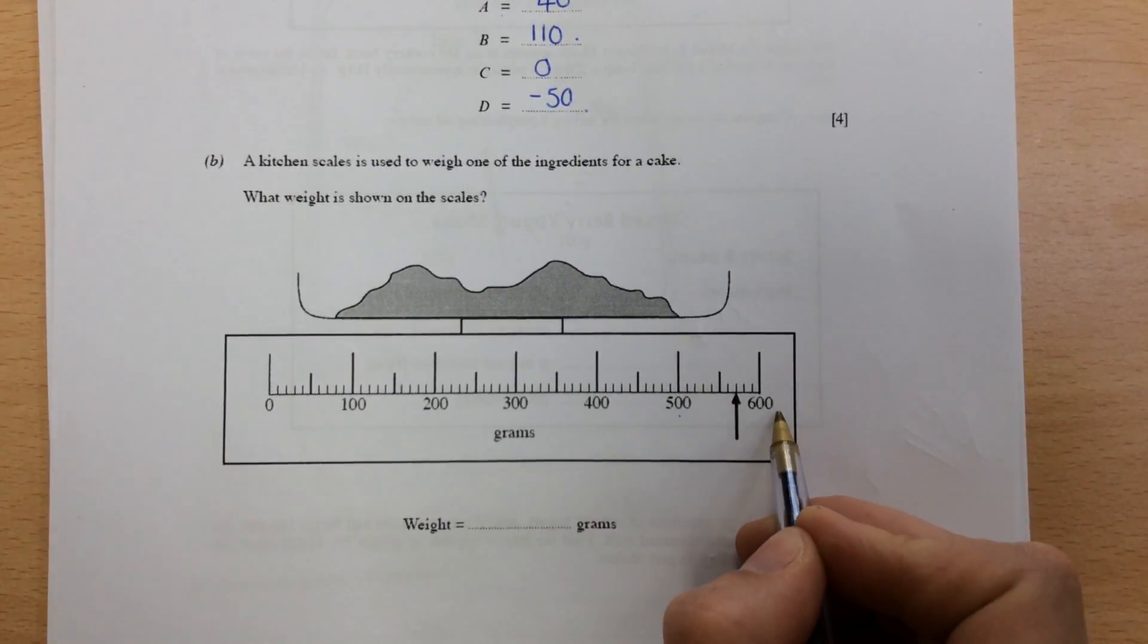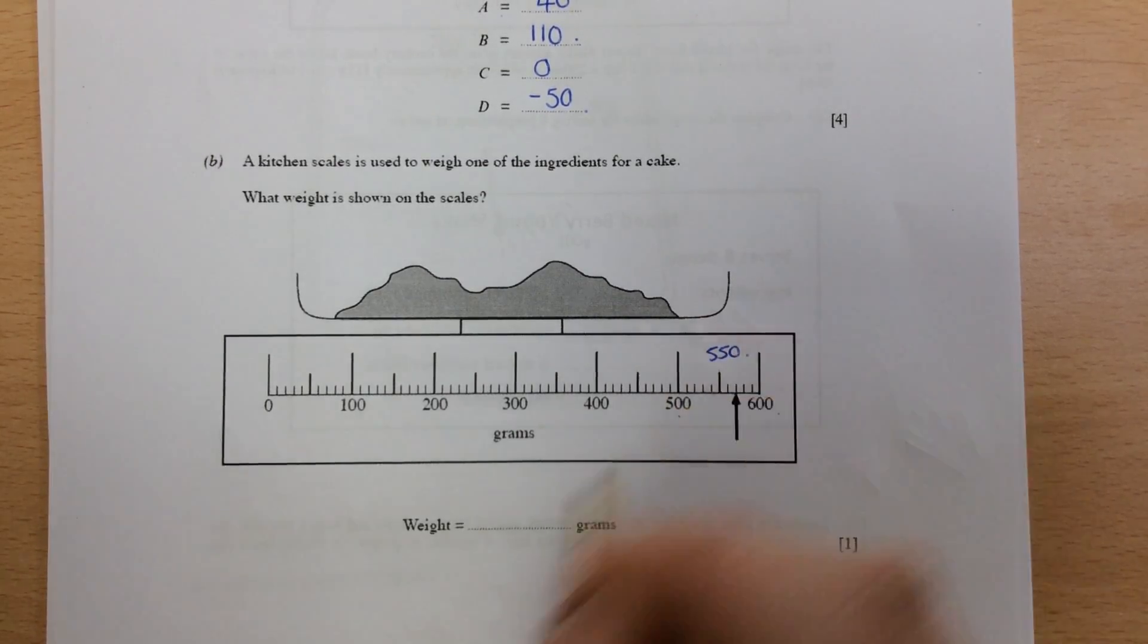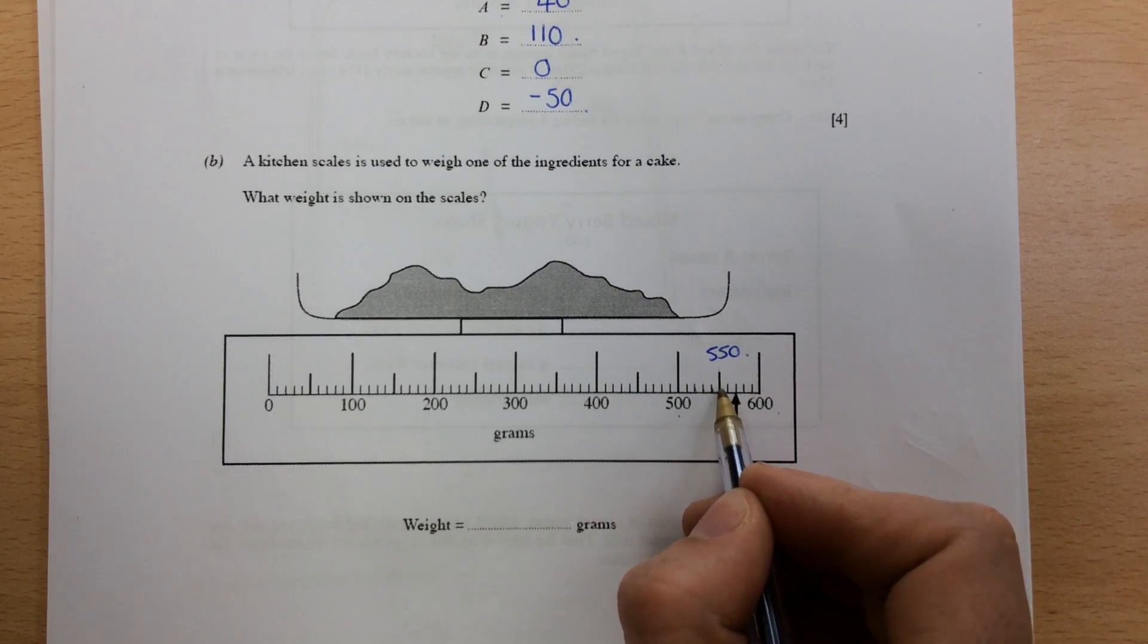Now we've got 500 to 600 here. So halfway is going to be 550. And we've got 1, 2, 3, 4, 5 gaps.